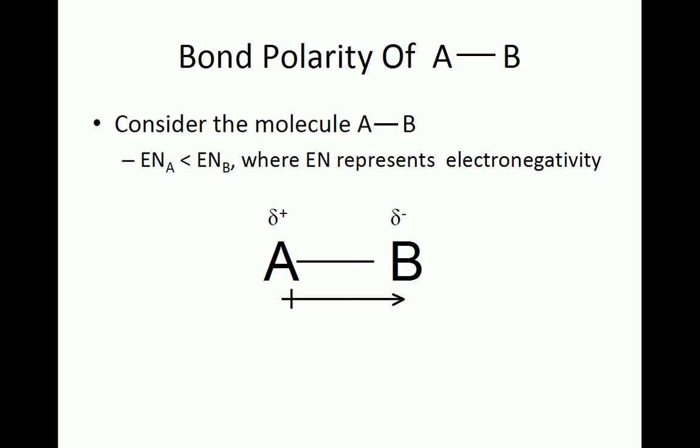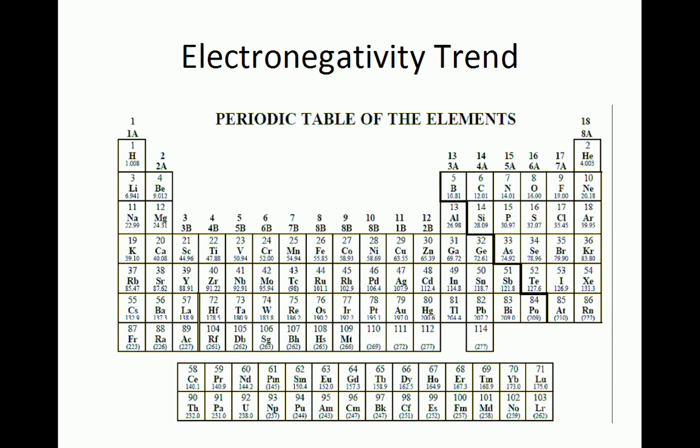A good place to start assessing bond polarity is to review the trends in electronegativity when we look at the periodic table. Recall that electronegativity is the ability of an atom to attract electrons. Keep in mind that we usually remove the noble gases from consideration when we talk about trends.